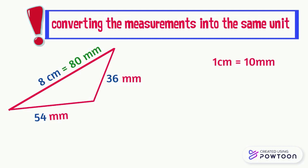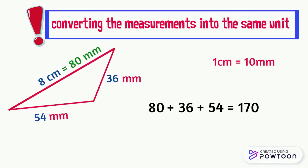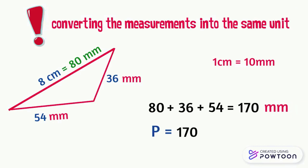The perimeter of this triangle is equal to the sum of the length of its 3 sides: 80 plus 36 plus 54 equals 170. Don't forget the unit, which is millimeter. So the perimeter is 170 millimeters.